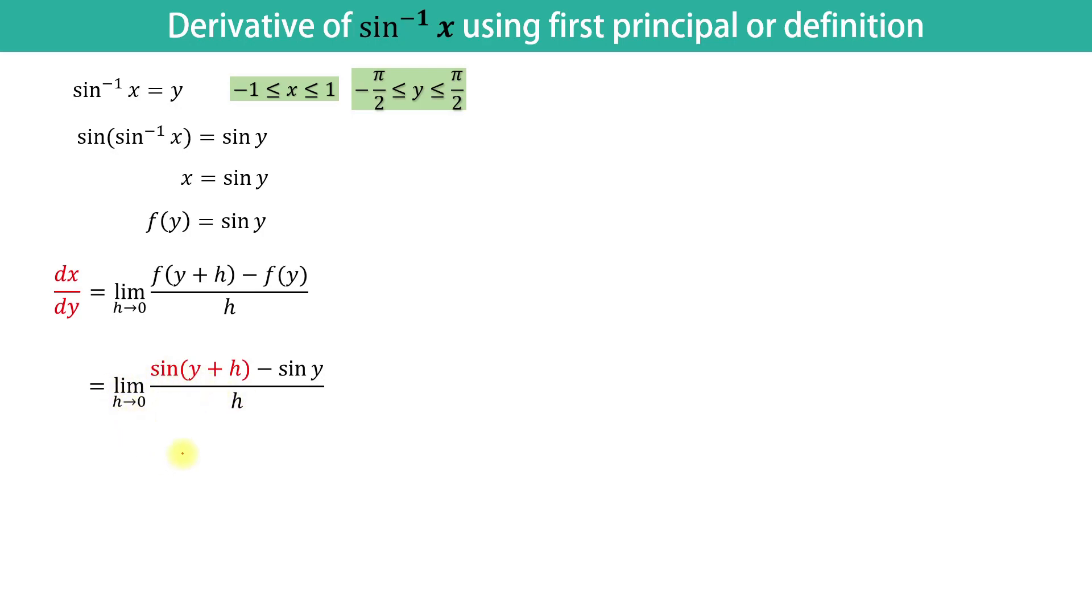Now, by using the identity sin A plus B equals sin A times cos B plus cos A times sin B, we can write sin of y plus h equals sin y times cos h plus cos y times sin h.